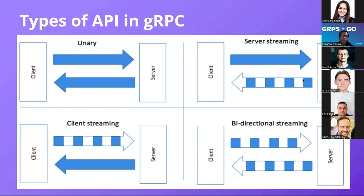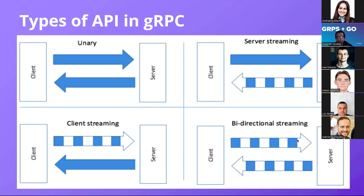We also have client streaming, where the client sends a stream of data sequences and the server returns just a single response. And we have bidirectional streaming, where both the client and the server can send a stream of messages to each other independently — meaning the client and server can send messages in any sequence.